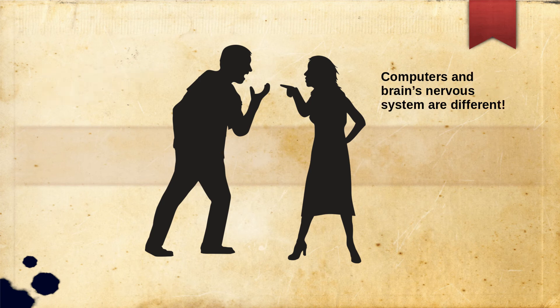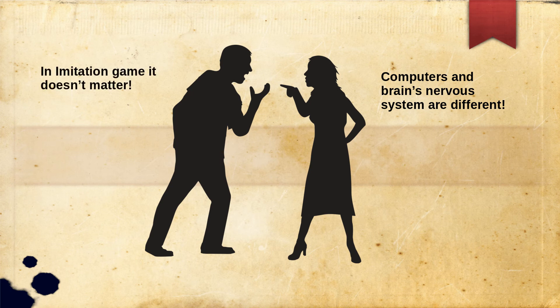Objection 7: The difference between a nervous system and a digital computer. Turing agrees with this, but says under the conditions of the imitation game — where computer and human don't have direct contact other than text communication — these differences don't make the game any easier for the interrogator.